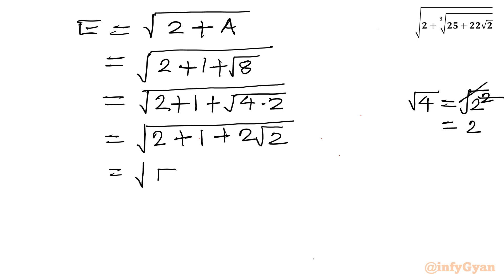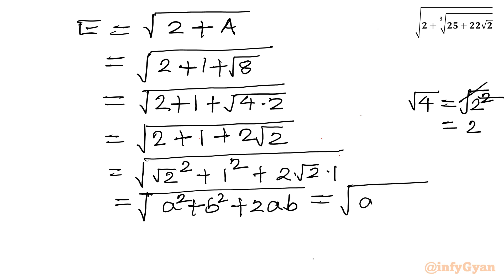Now 2 can be written as root 2 square. 1 can be written as 1 square. So it is recalling another identity A square plus 2 times root 2 times 1. So it is recalling another identity A square plus B square plus 2AB. So using this identity I can write it is A plus B whole square. Now square root and square will be over. So it is left with A plus B only.